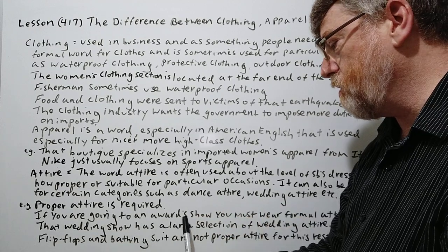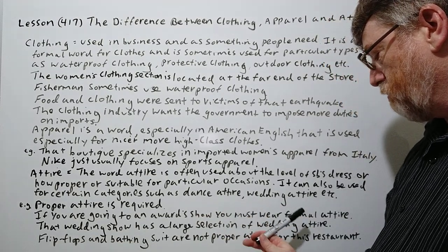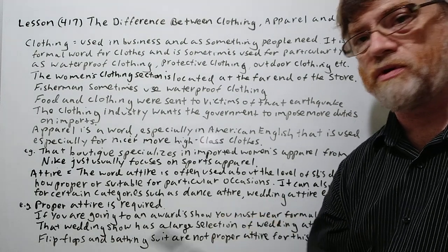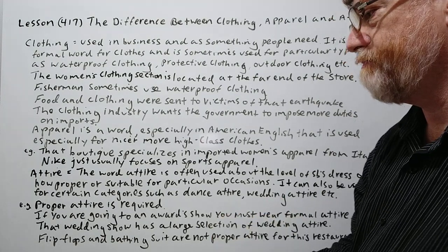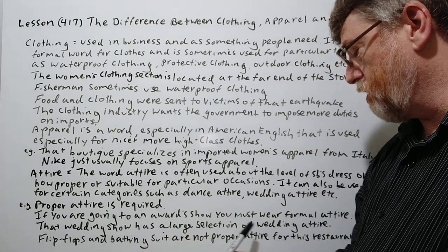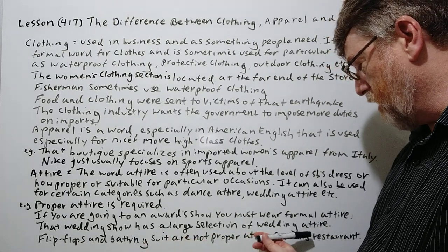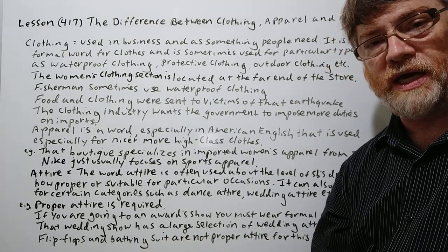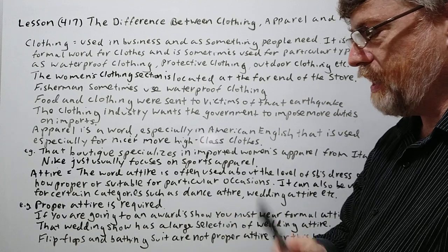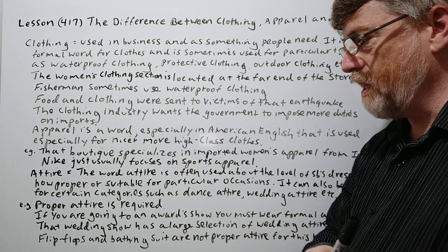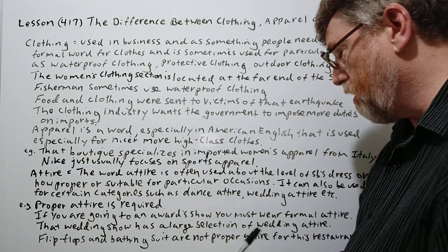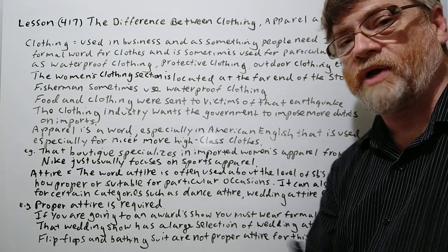'If you are going to an award show, you must wear formal attire' — so this is in the sense of how suitable the clothing is for the occasion. 'That wedding show has a large selection of wedding attire' — again, suitable for certain occasions. And: 'Flip-flops and bathing suits are not proper attire for this restaurant.'